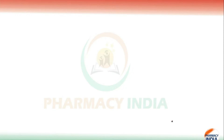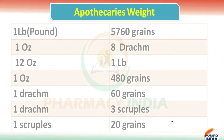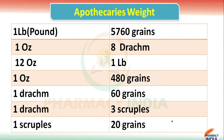Today in this video we are going to discuss about the Apothecaries' Weight System. This is very important in terms of your GPAT exam or pharmacist exam, because sometimes the question may ask that one pound (1 lb) is equal to how much grains — the answer is 5760 grains. Also, one oz is equal to eight drachms, and twelve oz is equal to one lb.